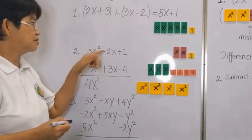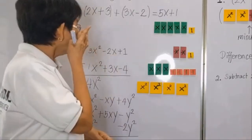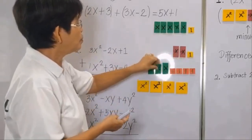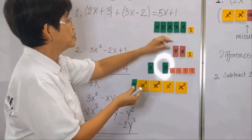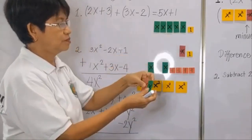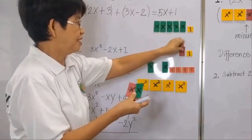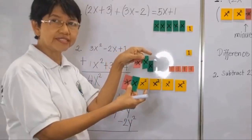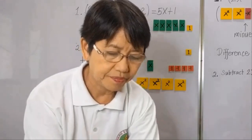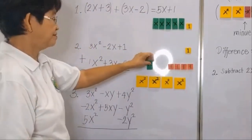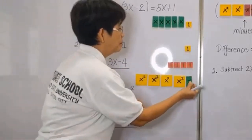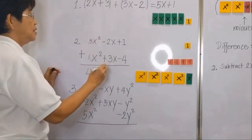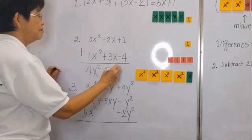So we have 4x squared. Then 3 minus 2 — we have 2 red tiles, and we will pair that with 2 green tiles. This is a zero pair. And another one — this is a zero pair. So we have to set this aside. What is left? We have an x. So 3 minus 2 is equal to positive x.